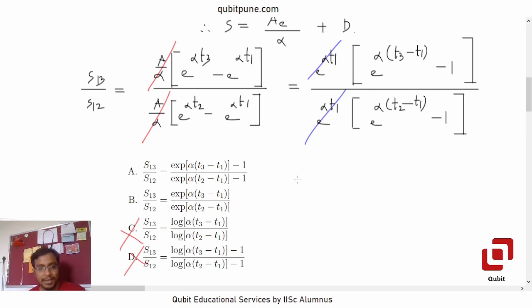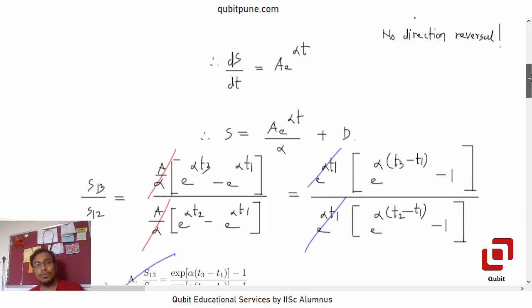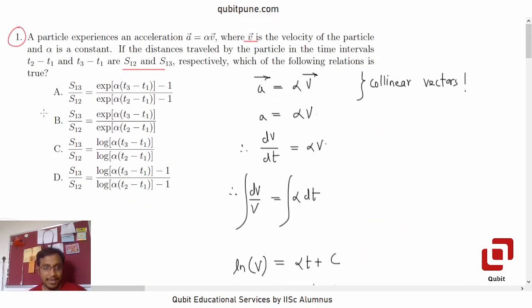So e to the power alpha t1 goes and the one with the negative one in both the terms should be our option and that is option A. Exponential, that is e raised to alpha t3 minus t1 minus 1, yes. So correct option to question number 1 is option A.